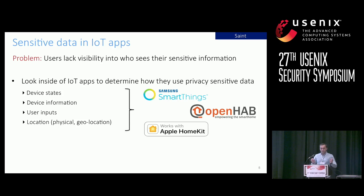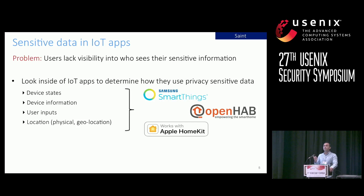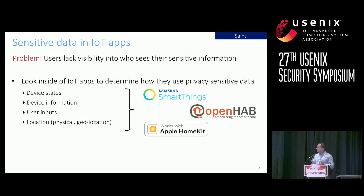To address this problem, we conduct a study of three major IoT platforms: SmartThings, Apple HomeKit, and OpenHAB. We aim at understanding the program structures of these platforms, as well as identifying how they use privacy-sensitive data. In our study, we have identified four types of IoT-specific sensitive data that applications can access: device states, device information, user inputs, and location.